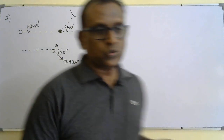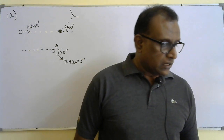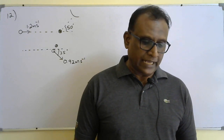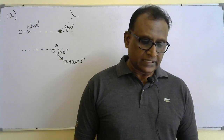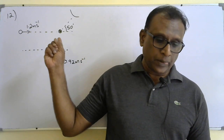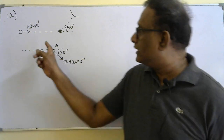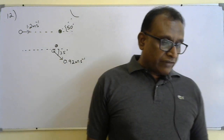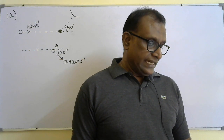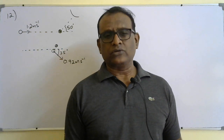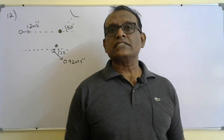Question number twelve: in snooker, a white ball moves at 1.2 m/s and collides with a stationary black ball of equal mass. Part A: state what is meant by an inelastic collision. Answer: total kinetic energy is not conserved.